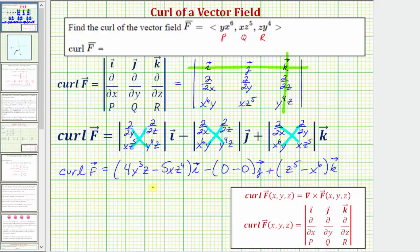Let's write this in component form. So the curl of vector field f has an x component of four y to the third z minus five x z to the fourth, a y component of zero, and a z component of z to the fifth minus x to the sixth.